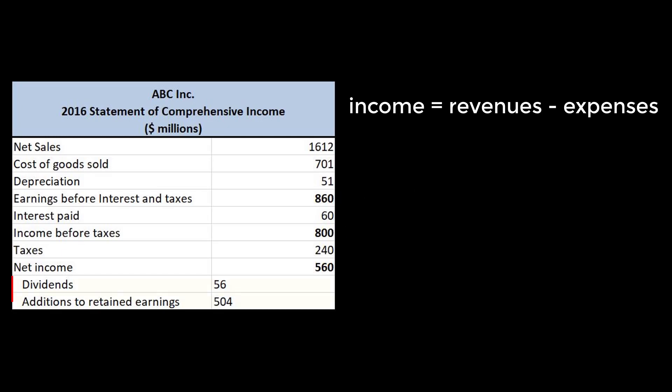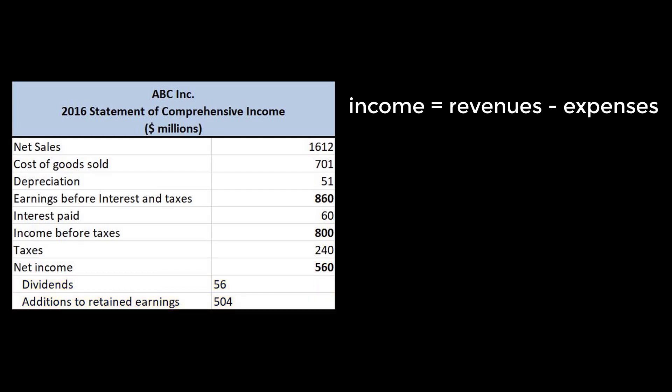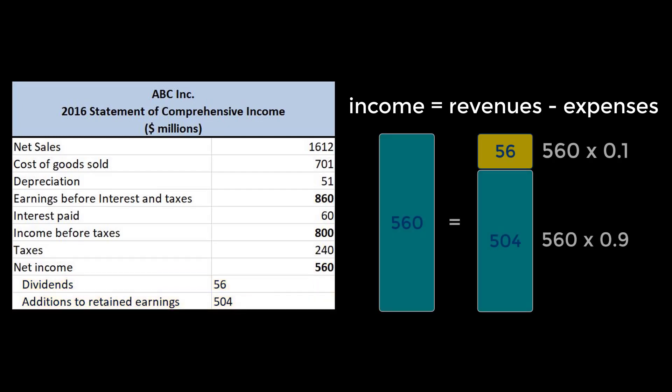There's one more important step at the bottom. Depending on your firm's dividend policy, some percentage of your net income will be paid out to shareholders as dividends. In this case, we can see that the company paid out 10% of its net income as dividends.